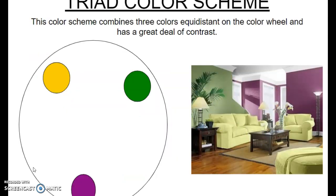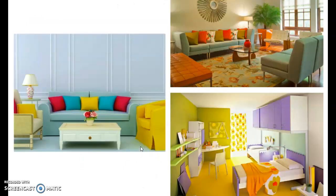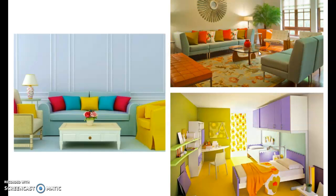Here's one using secondary triad colors: violet, yellow — or more of an orange — and green. Here are a few examples. You can see red, yellow, and blue here. Here's your secondary triad. This one's kind of in between the colors, but it looks like they are three colors equal distance from each other on the color wheel.